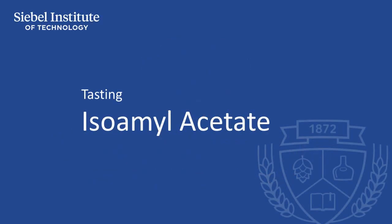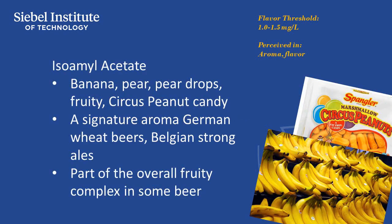Isoamyl acetate is most frequently described as banana-like, and for many tasters it increases the perception of sweetness in beer. It's one of the signature aromas in many beer styles, including German wheat beers and Belgian strong ales, and it contributes to the overall ester profile of many beer styles.